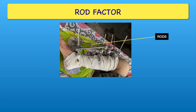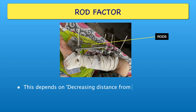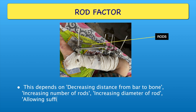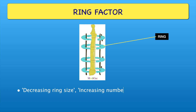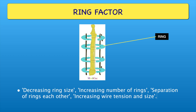The third is rod factor, which depends on decreasing distance from bar to bone, increasing number of rods, increasing diameter of rod, and allowing sufficient space for soft tissue swelling. The fourth is ring factor, which depends on decreasing ring size, increasing number of rings, separation of rings from each other, and increasing wire tension and size.